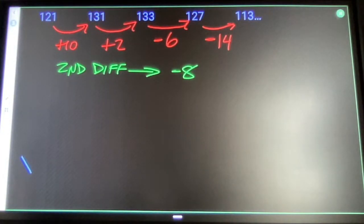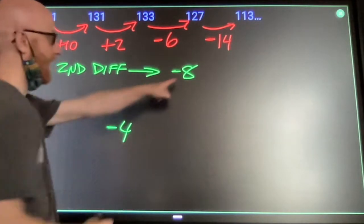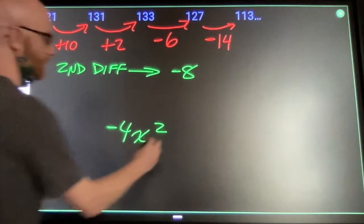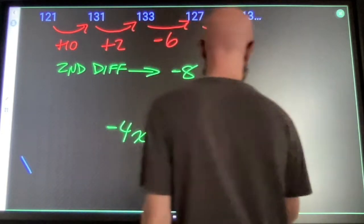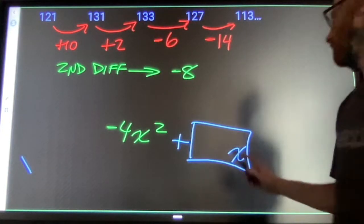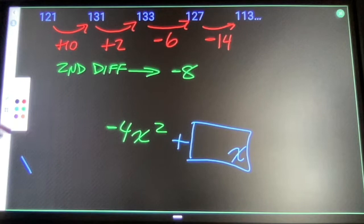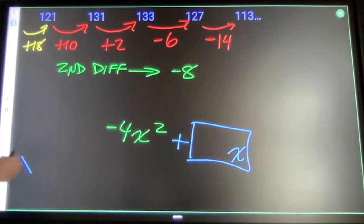My formula is going to start half of that times x squared plus something times x, and then plus what number comes before 121. So before I can find that, I need to find what number comes before 10. That would be 18, right? 18 minus 8 is 10, 10 minus 8 is 2, and so on. Sum number plus 18 is 121. That number is 103.